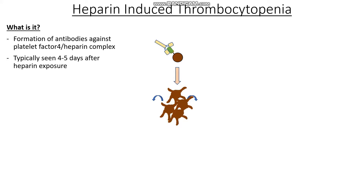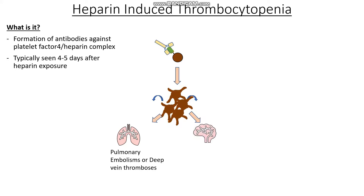These clots can get deposited in the venous system — in places like our lungs and pulmonary veins — giving us a pulmonary embolism or deep vein thrombosis, the former being quite life-threatening. In the arterial system, they might get deposited in the brain or the heart, giving us things like a stroke or myocardial infarction. This is actually quite a serious condition.